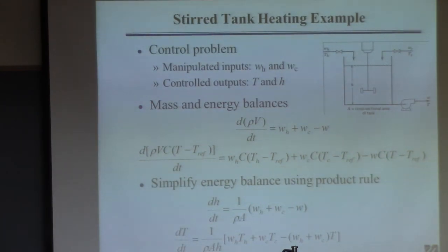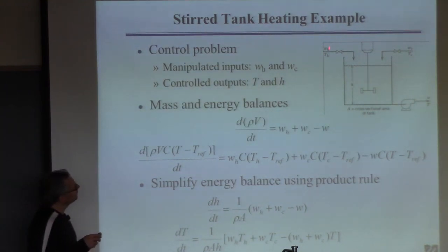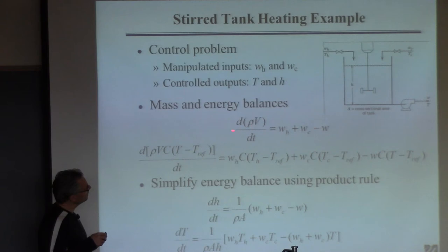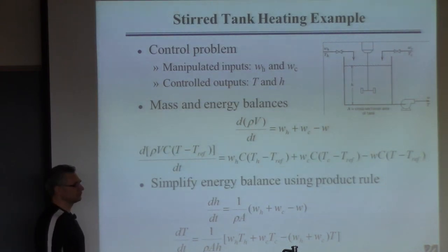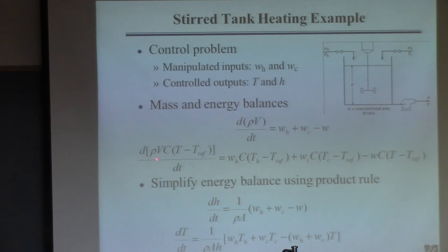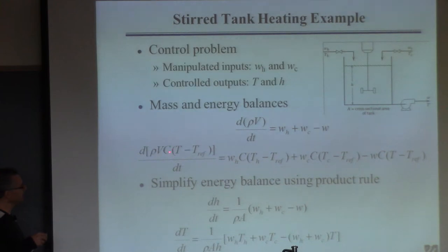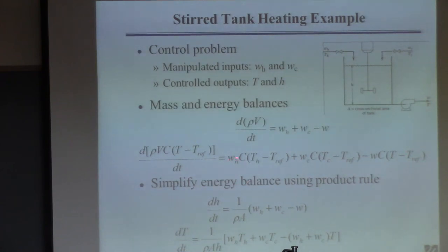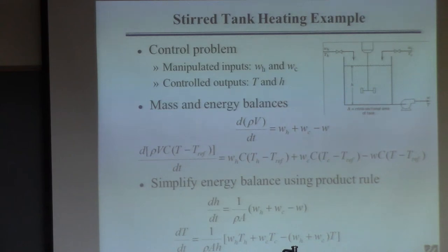First, write an overall mass balance: accumulation equals the two flows in minus the flow out. Then write an energy balance using reference temperature for enthalpy. The accumulation of energy in the tank involves volume, density, and heat capacity C. This gives flow of energy in from the two inlet streams — hot and cold — minus the enthalpy leaving with the outlet fluid.